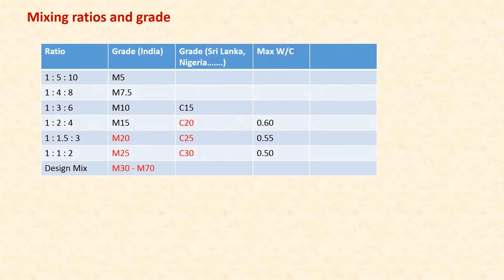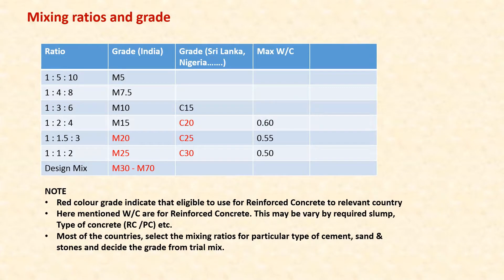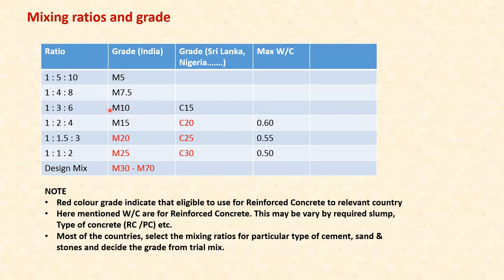Here are some mixing ratios and grades. The grades used in India versus grades used in Sri Lanka, Nigeria, and other countries are shown, along with the maximum water-cement ratio. For example, a 1:3:6 ratio is called M10 in India and C15 in Sri Lanka, Nigeria, and other countries. A 1:2:4 ratio is M15 in India and C20 in Sri Lanka, Nigeria, and other countries.